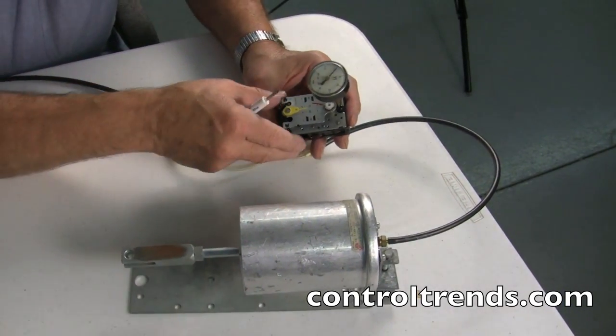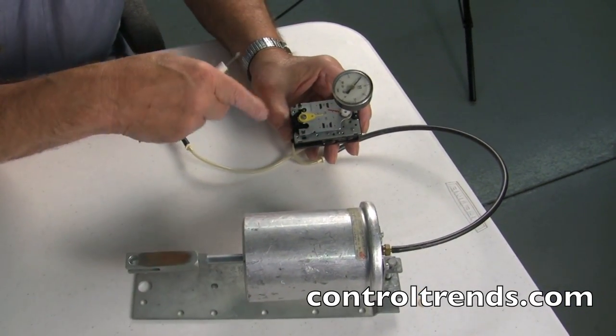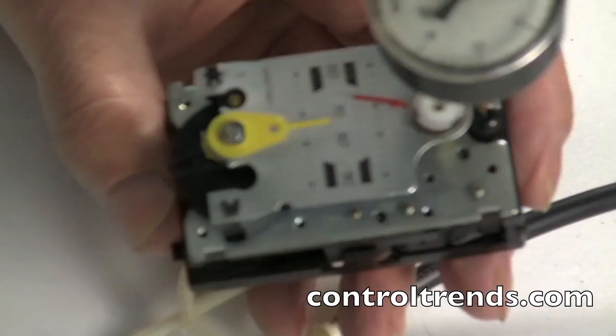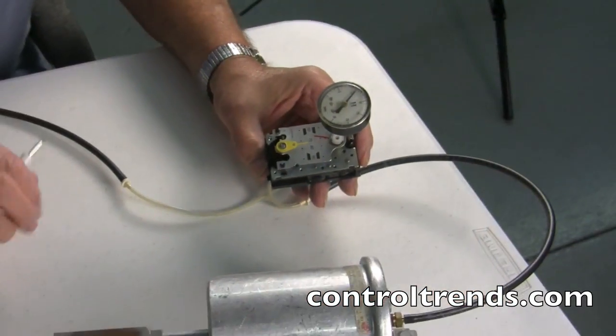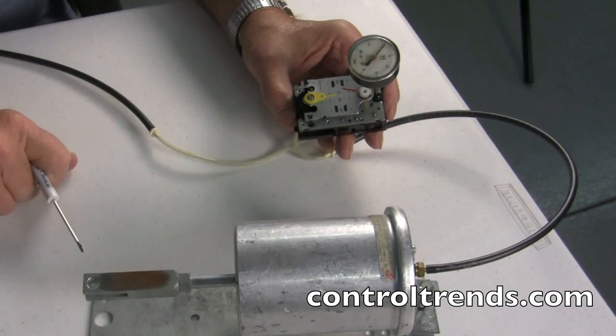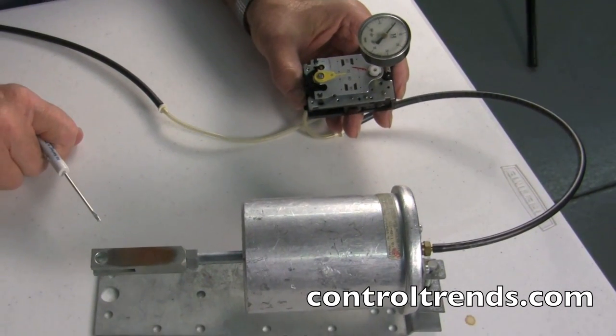If the temperature were to drop, if I put ice on this, the thermostat would respond, and it would close this down and send more to heating, and if it warms up, it would open up accordingly to give me more cooling.